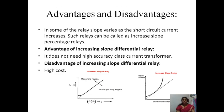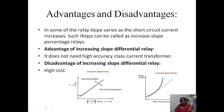Advantages and disadvantages of constant slope relay versus increased slope relay: in some relays, the slope varies as the short circuit current increases — such relays are called increasing slope percentage differential relays. The advantage of an increasing slope relay is that it does not need high-accuracy class current transformers. The disadvantage is its high cost. We are generally using constant slope relays.